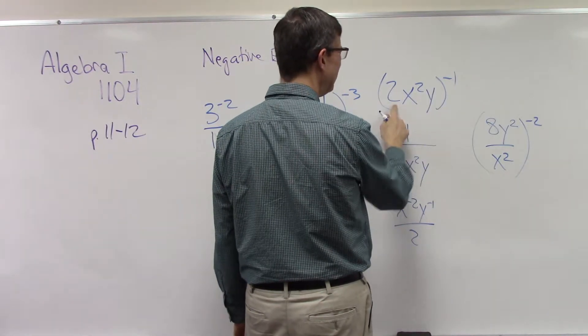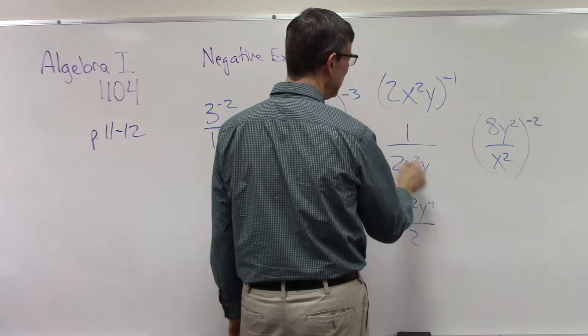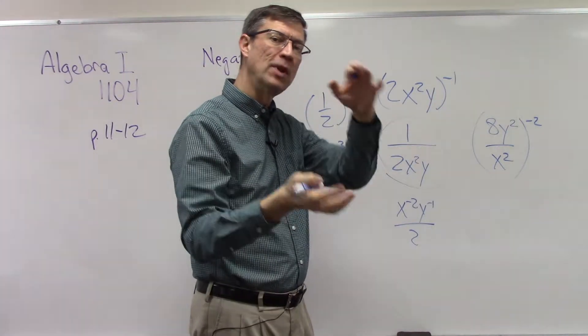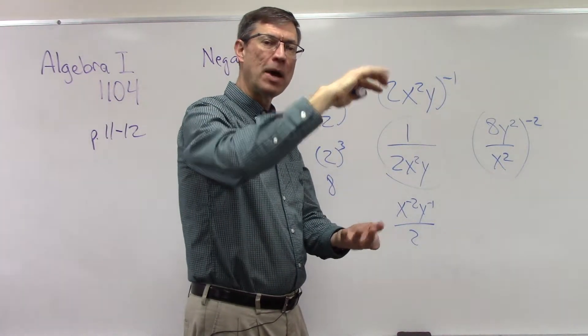You could technically write this as X to the negative second, Y to the negative second, and put the 2 in the denominator. If it's to the negative one power, it means flip it from the top to the bottom or from the bottom to the top.